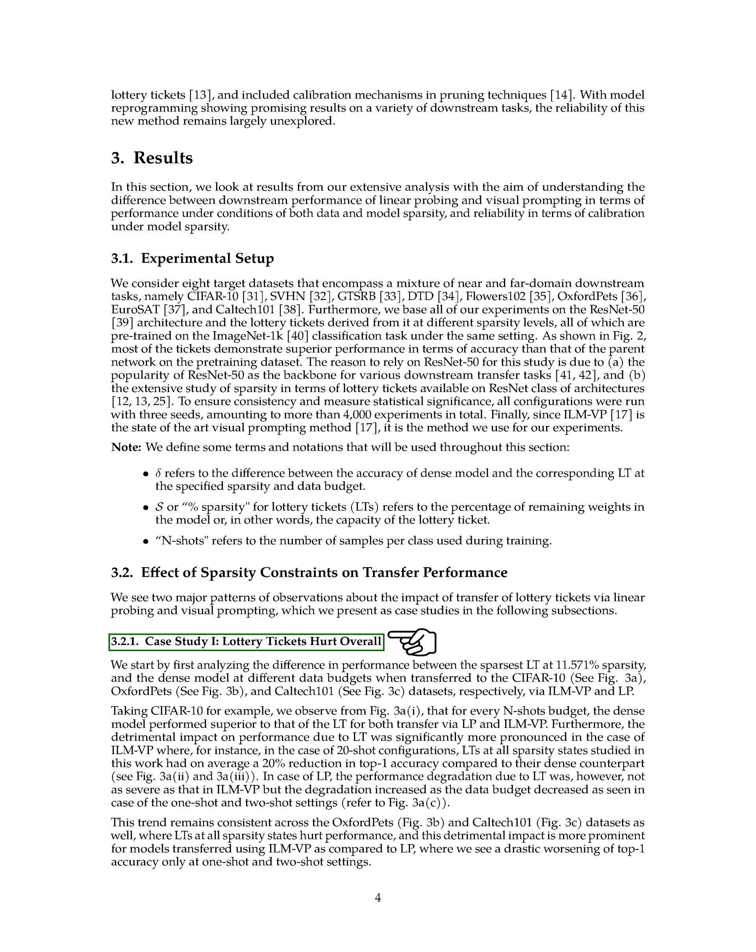We noticed two main patterns about the transfer of lottery tickets via linear probing and visual prompting. In our first case study, we found that lottery tickets generally hinder performance. We compared the performance of the sparsest lottery ticket, with 11.571% sparsity, and the dense model at different data budgets when transferred to the CIFAR-10, Oxford Pets, and Caltech-101 datasets via ILMVP and LP. For example, in the CIFAR-10 dataset, the dense model outperformed the lottery ticket for every N-SHOTS budget, regardless of whether we used LP or ILMVP. The negative impact of the lottery ticket was particularly noticeable with ILMVP — in the 20-shot configurations, lottery tickets at all levels of sparsity had an average 20% reduction in top-1 accuracy compared to their dense counterparts. With LP, the performance drop wasn't as severe, but it increased as the data budget decreased.